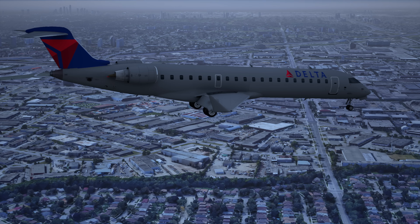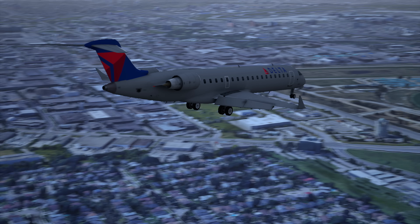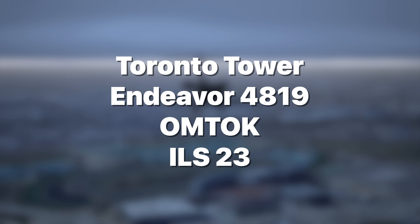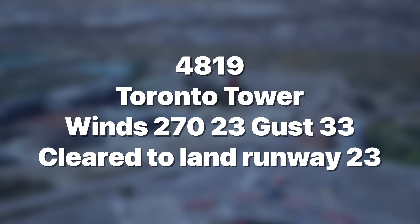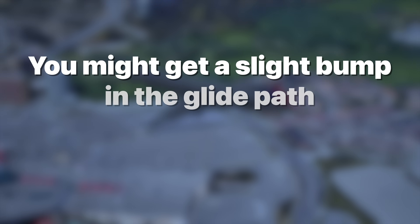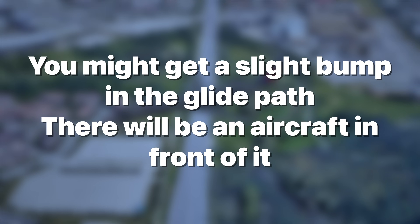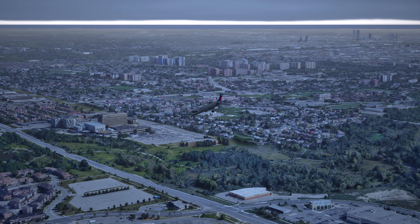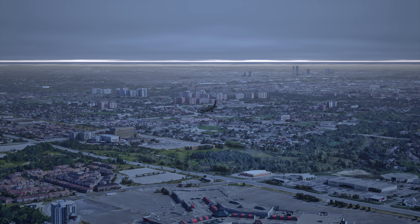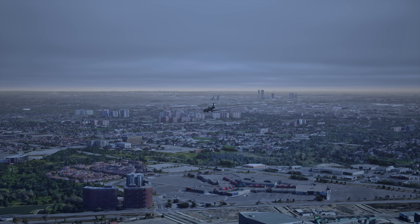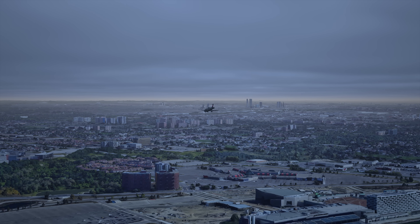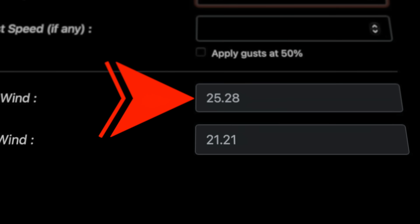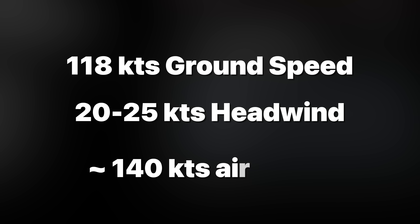But the devil is in the details. You might remember from the ATC tapes that the winds were strong and gusting. Toronto Tower reported wind 270 at 23, gusting 33, with a note that the following aircraft might get a slight bump in the glide path. The winds were gusting 23 to 33 knots, and that ADS-B data is only ground speed, not airspeed. To get a more accurate view of the airspeed and subsequently the speed that the plane would stall at, we need to add that wind component. If we calculate out the crosswind component, that gives us about 20 to 25 knots of headwind — or if we add that to our ground speed, it gives us around 140 knots.